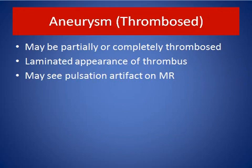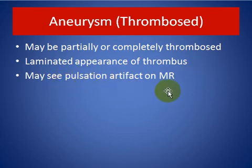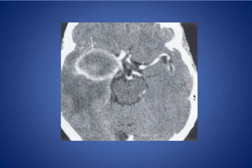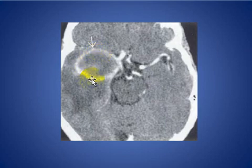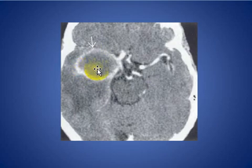A thrombosed aneurysm may be partially or completely thrombosed. The laminated appearance of thrombus and pulsation artifact may be seen on MRI. Here we see a large mass lesion with ring enhancement due to a partially thrombosed giant aneurysm — greater than 2.5 centimeters.